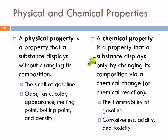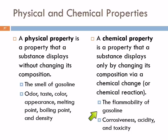A chemical property is something that is displayed only by changing the composition of the substance through a chemical change. A chemical change and a chemical reaction are exactly the same thing. So if you have a chemical reaction, the components are changing and you don't have what you had before. Gasoline is flammable — it's a chemical property because when you burn the gasoline, it's not gasoline anymore. You can measure the density of gasoline without changing it, but you can't demonstrate its flammability without destroying it.